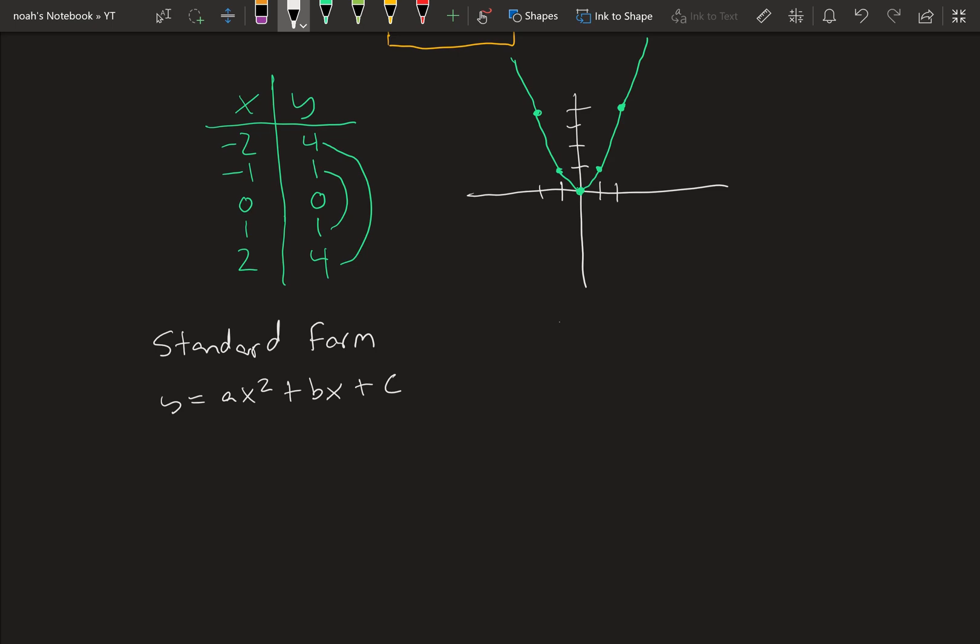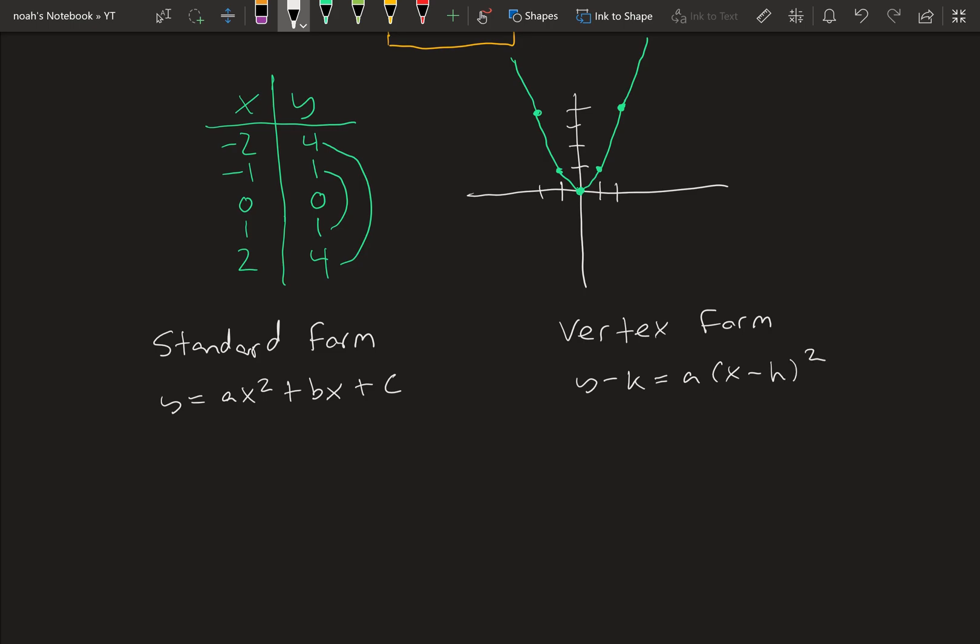It's y equal to ax squared plus bx plus c. And then vertex form, which is what is easier to work with. So this one's y minus k equal to a times x minus h squared. And we can analyze the function easier this way.